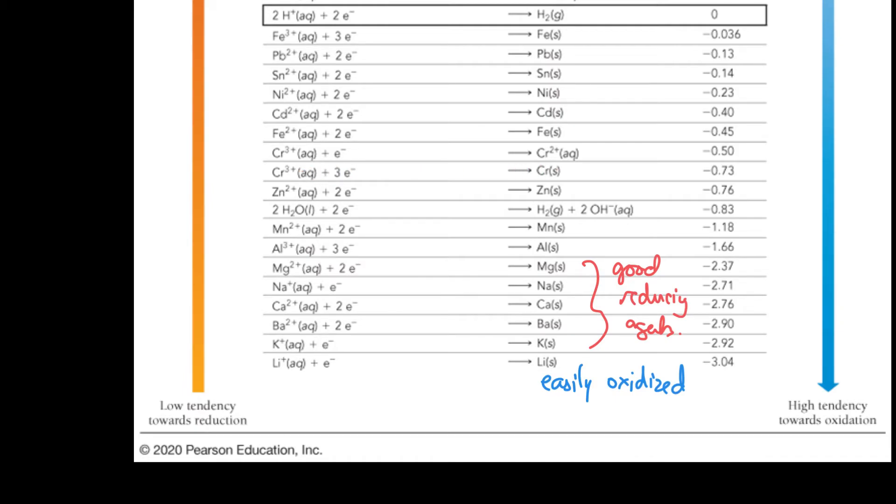And so imagine we took, say, iron 3+ and chromium 2+. Well, iron 3+ is higher than chromium 2+ so we know that this reaction would go forwards and this reaction would go backwards.